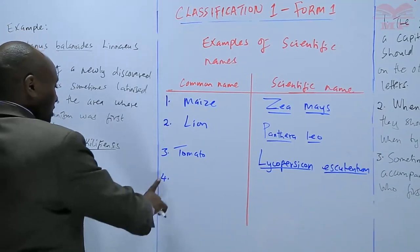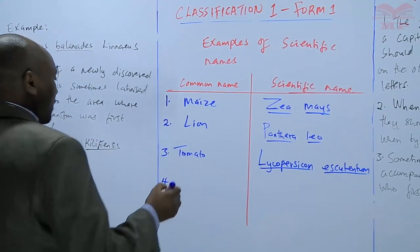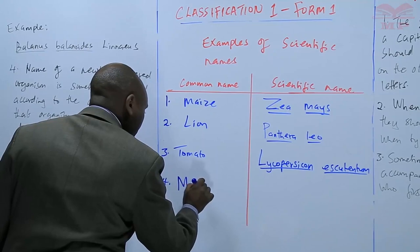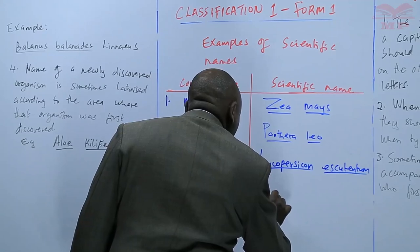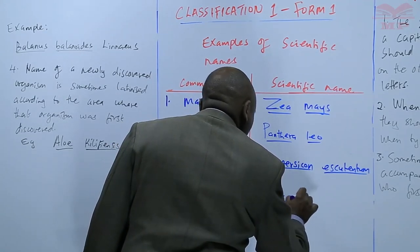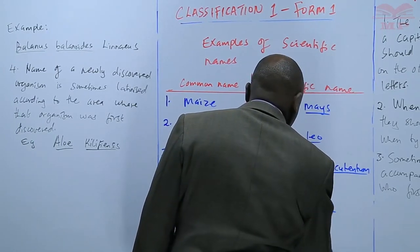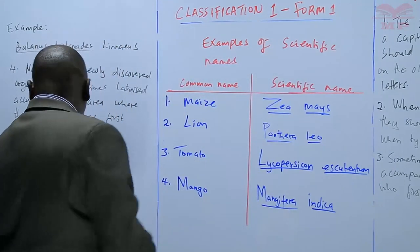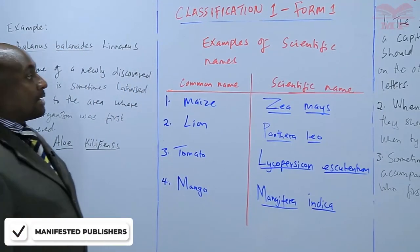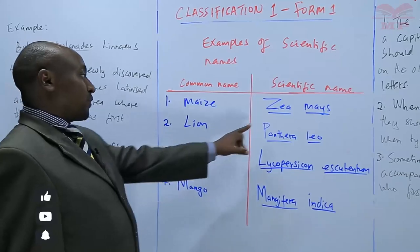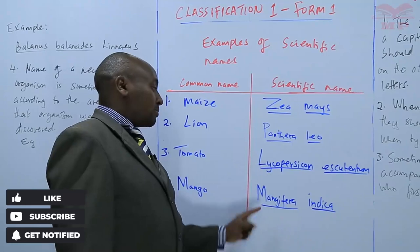Another example is mango, whose scientific name is Mangifera indica. So those are just a few examples you can use to practice the rules — the names must be underlined separately, and the first letter of the genus name should be capital.